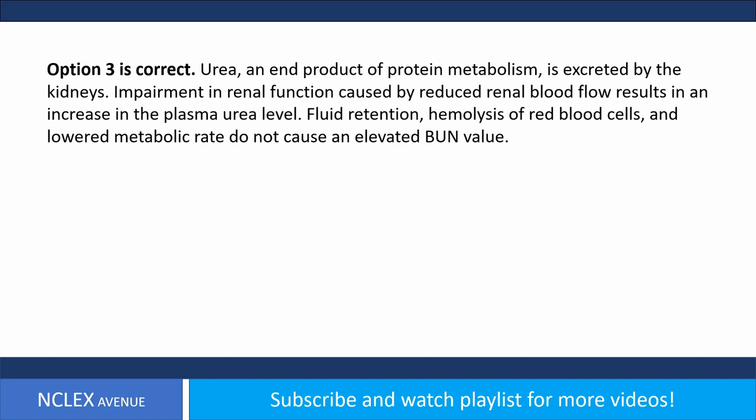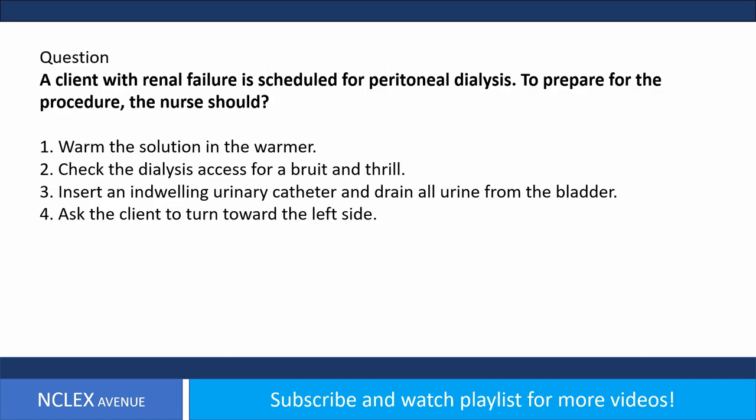Question. A client with renal failure is scheduled for peritoneal dialysis. To prepare for the procedure, the nurse should: 1. Warm the solution in the warmer. 2. Check the dialysis access for a bruit and thrill. 3. Insert an indwelling urinary catheter and drain all urine from the bladder. 4. Ask the client to turn toward the left side.